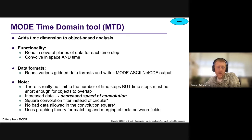There are two differences I wanted to point out from MODE. The convolution filter used inside Mode Time Domain is square in shape instead of circular. And unlike MODE, there's no bad data allowed to be within the convolution shape for objects. Also, graph theory is used for matching and merging objects between fields.